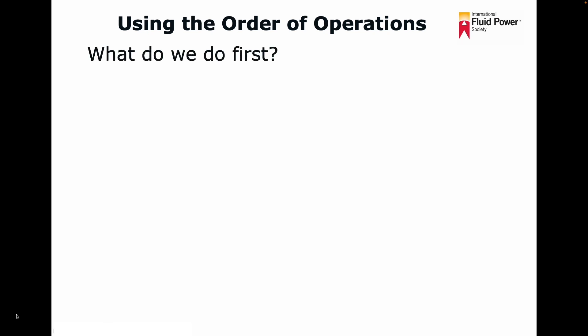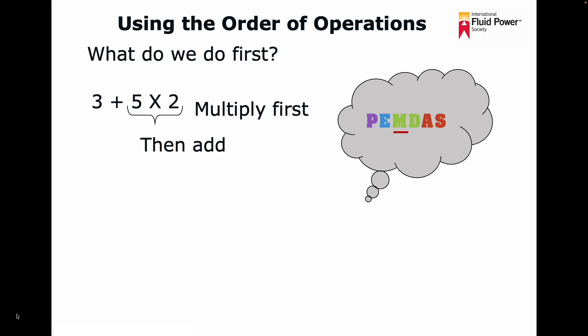Using the order of operations, what do we do first in this example? Three plus five times two. Well, PEMDAS says we multiply first, so five times two is 10, and then we add. So three plus 10 equals 13. Therefore, 13 is the correct answer.